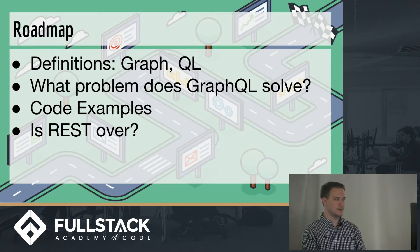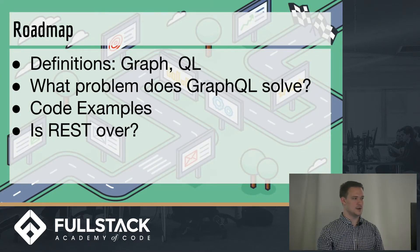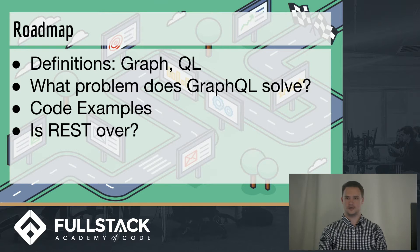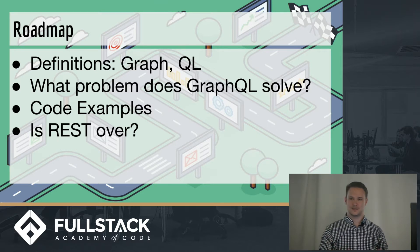So this is my roadmap. I'm going to cover some definitions: What is a graph? What is a query language? What problem does GraphQL help us solve? Then we'll go through some code examples, and then we'll return to this final question: Is REST over?